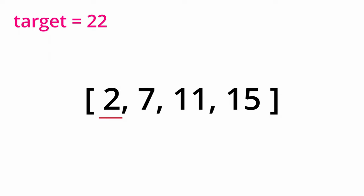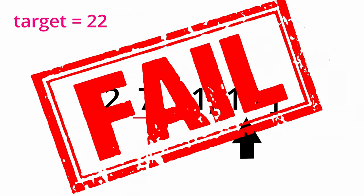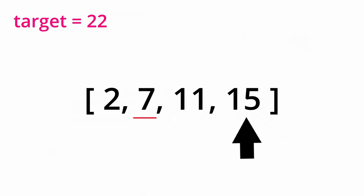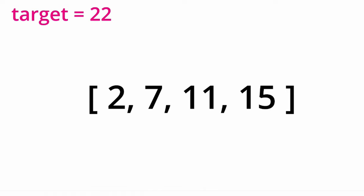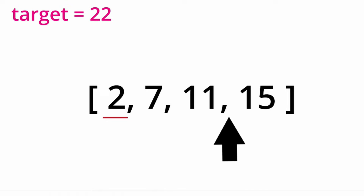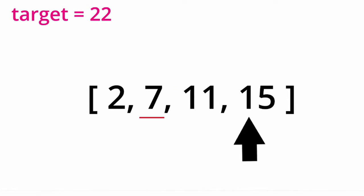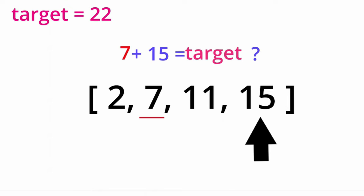The naive solution would be to iterate through the input array and for every index, check every other index's value to see if the two values combined equal our target. This solution isn't very efficient because we are unnecessarily iterating through elements that we've already seen. When we calculate all values with the first value two, we already see every other number in the array, so we've already accessed the two values that result in 22 — those being seven and 15. But we still won't realize that until our second trip around when we calculate all values with the second value seven.